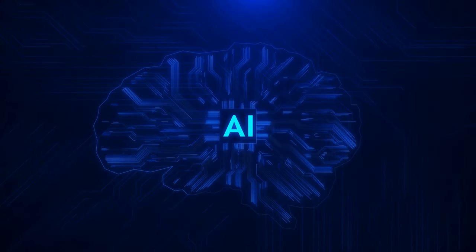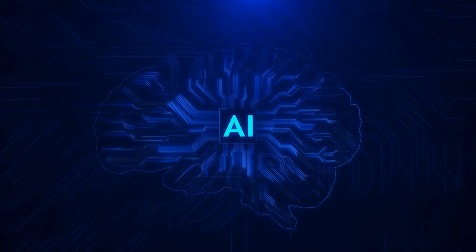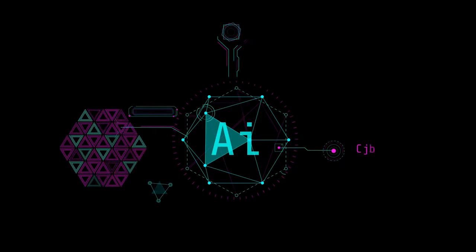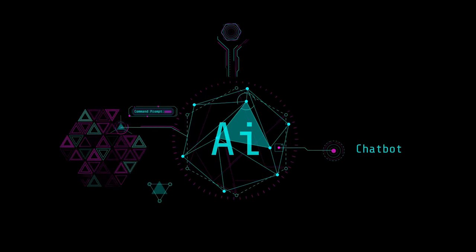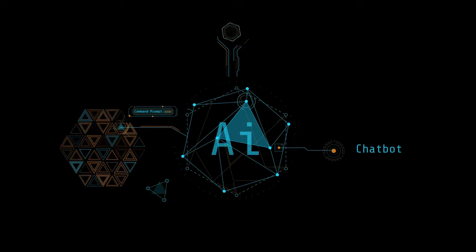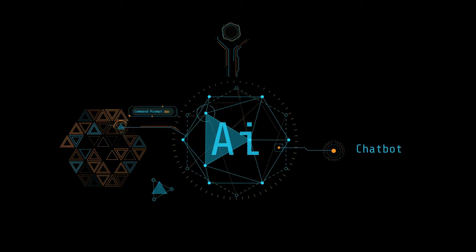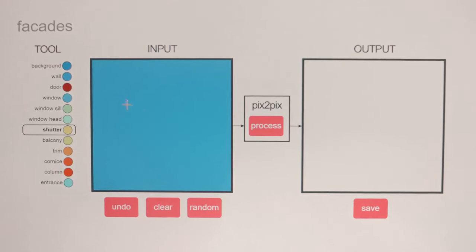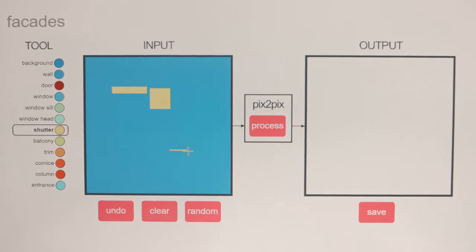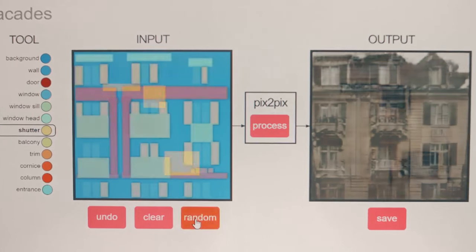Now, you might be wondering how this differs from other types of AI. Well, while most AI systems analyze and interpret data, generative AI takes it a step further by creating something new from that data. In essence, it's not just about understanding the world, it's about adding to it. To illustrate, think about a traditional AI used in image recognition. It scans a photo and identifies objects within it. A dog, a car, a tree. That's impressive, but generative AI can do more. Given enough data on dogs, cars, and trees, it could generate a new image featuring all three, perhaps a dog driving a car beneath a tree, even if it's never seen that exact scenario before.